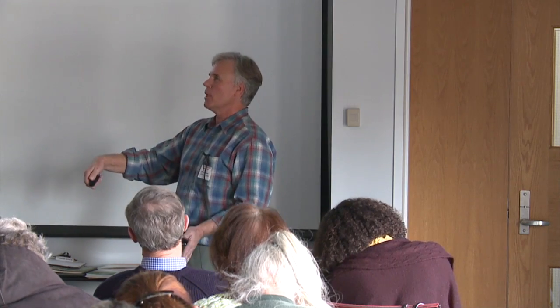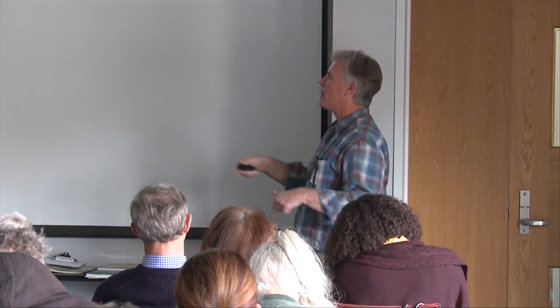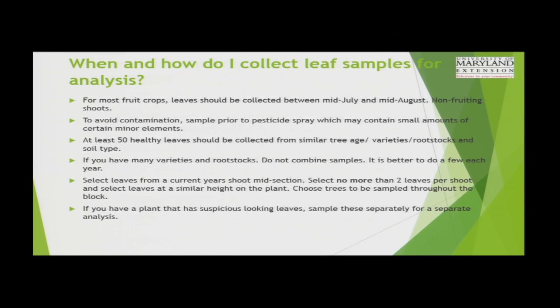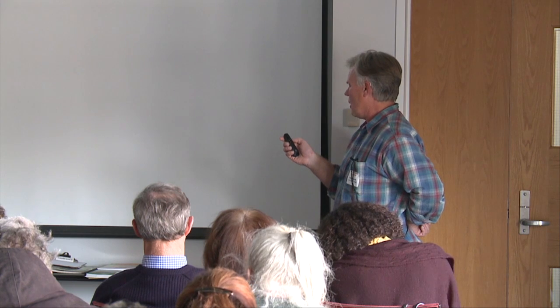You want to sample consistently. You can use the calendar as a guide, but realize that in an early year, things are ripening sooner, so timing matters. For the shoot itself: this is your annual growth here — this is where it was attached to a limb, the basal portion, and this would be the growing tip or terminal. You want to sample somewhere in the middle of that shoot, selecting only two leaves per shoot. Some people use indicator trees — the trees they sample every year — maybe five or six throughout their block of similar varieties and rootstocks. Try to do things consistently so you can build a reliable database to go back and look at.